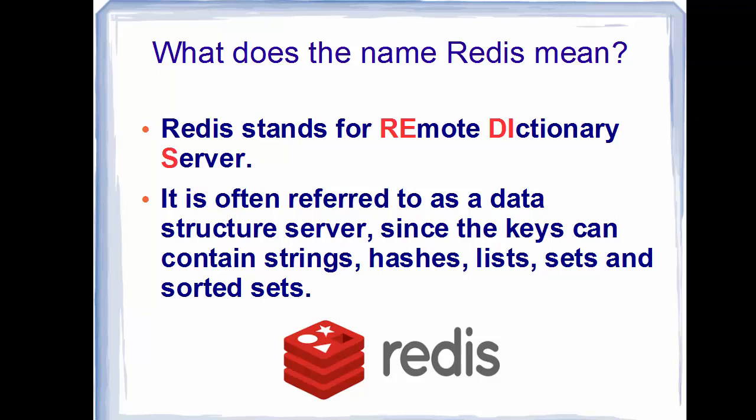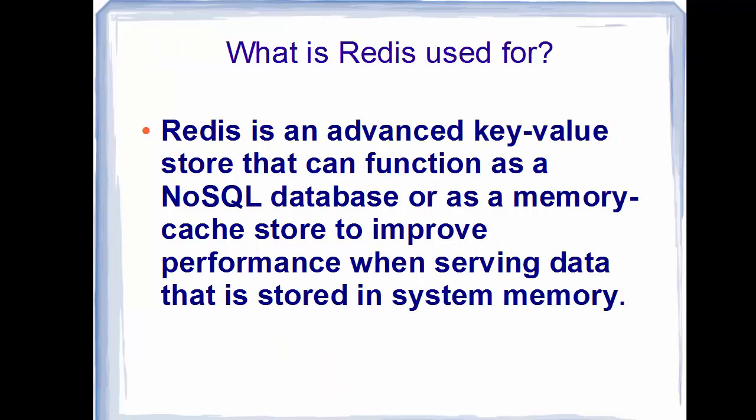What does the name Redis mean? Redis stands for Remote Directory Server. It is often referred to as a data structure server since the keys can contain strings, hashes, lists, sets, and sorted sets. Because the keys can contain these different data structures, it is often referred to as a data structure server.